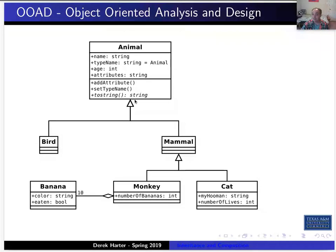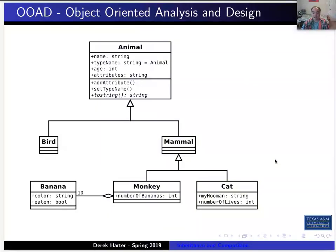For Mammal, we further derive two classes: Monkey and Cat. So Monkey and Cat are types of Mammals, and Mammal is an Animal. The diamond shape is used for aggregation — in this case, Monkeys can have a Banana, and the notation '0..10' means monkeys can have from zero to ten bananas that they hoard for eating. All right, so that's it for this video.